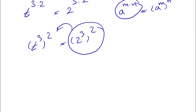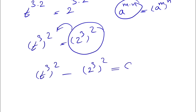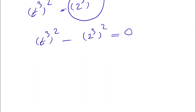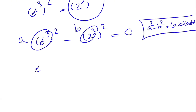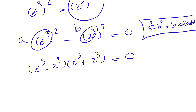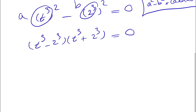We're going to bring the right side to the left side of the equation. When moving a term across, we apply a negative sign, so we get t cubed, to the power of 2, minus 2 cubed, to the power of 2, equals 0. We can see this is a difference of two squares, where a squared minus b squared equals a minus b times a plus b. Setting a equals t cubed and b equals 2 cubed, we get t cubed minus 2 cubed, times t cubed plus 2 cubed, equals 0.